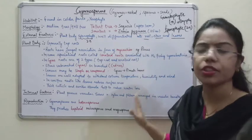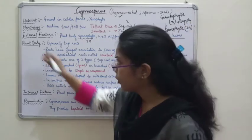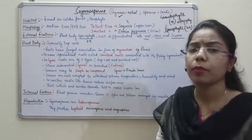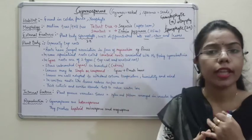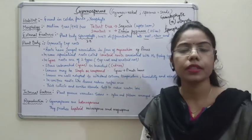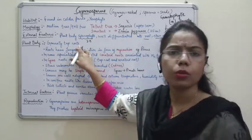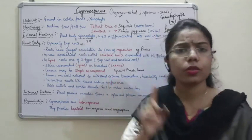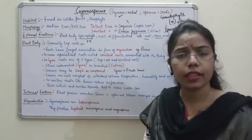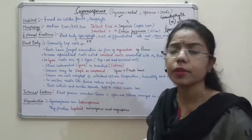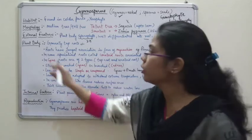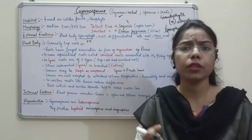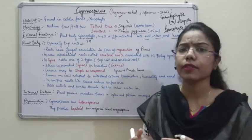So there is proper differentiation in gymnosperms. Now talking about morphology — the external features — we will discuss what types of roots are present. The roots of gymnosperms are mostly tap roots. This is very important: generally gymnosperms have a tap root system. Previously we discussed the association between roots of higher plants and fungi — we covered this in the lichens and mycorrhiza section.